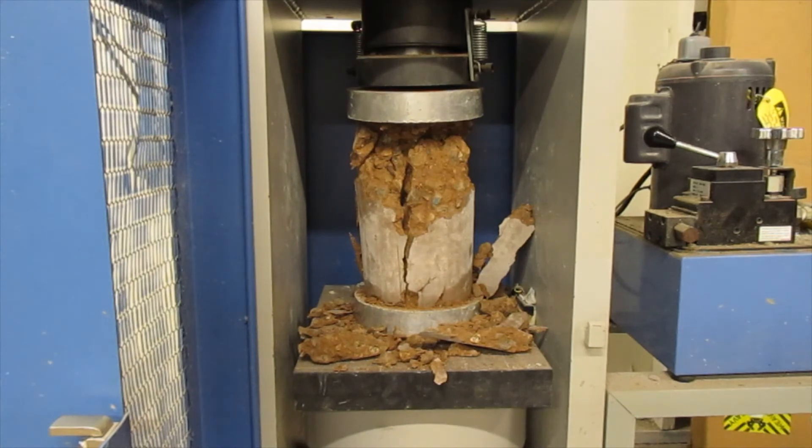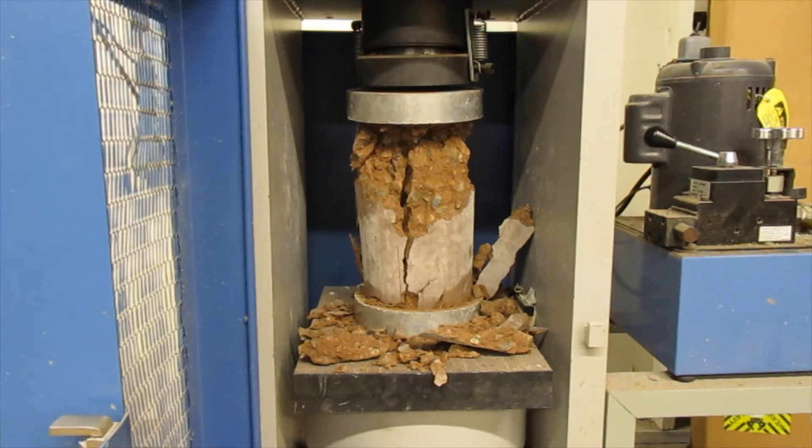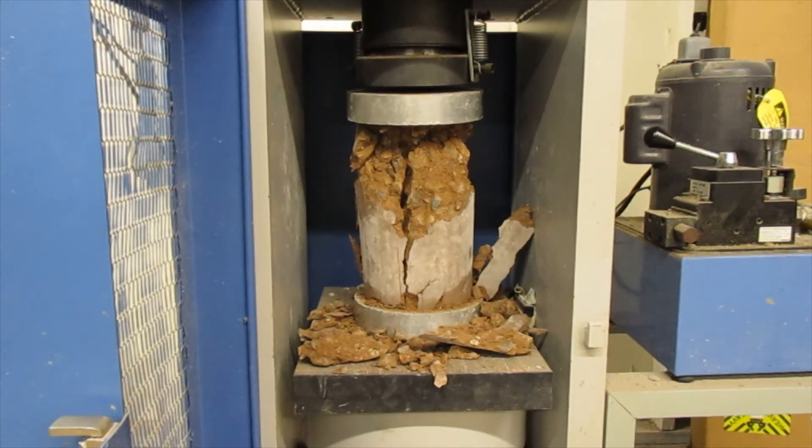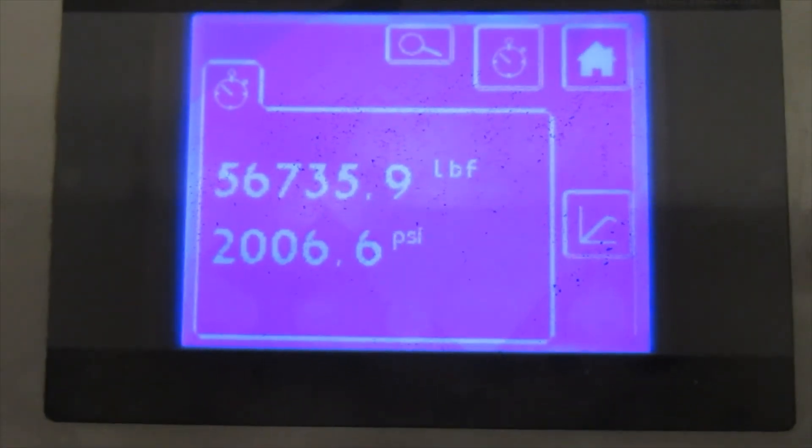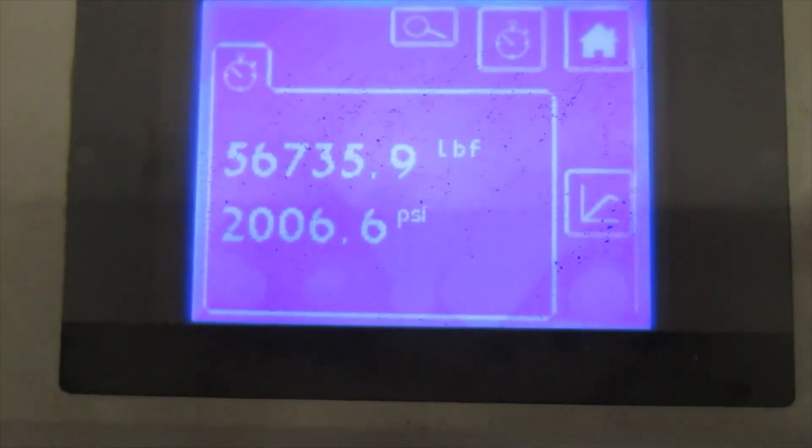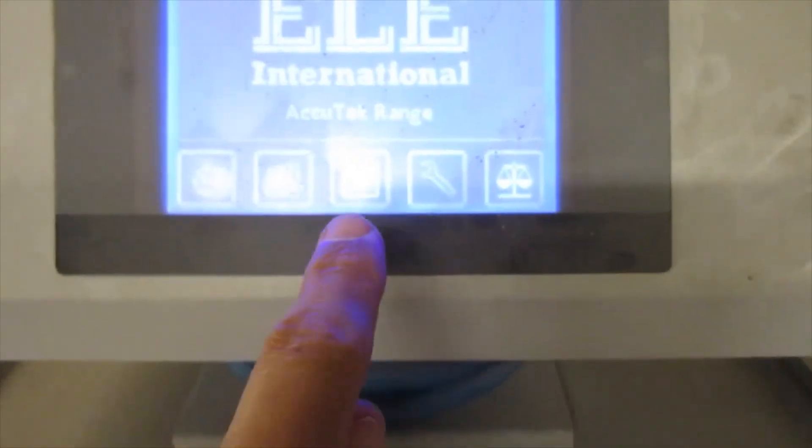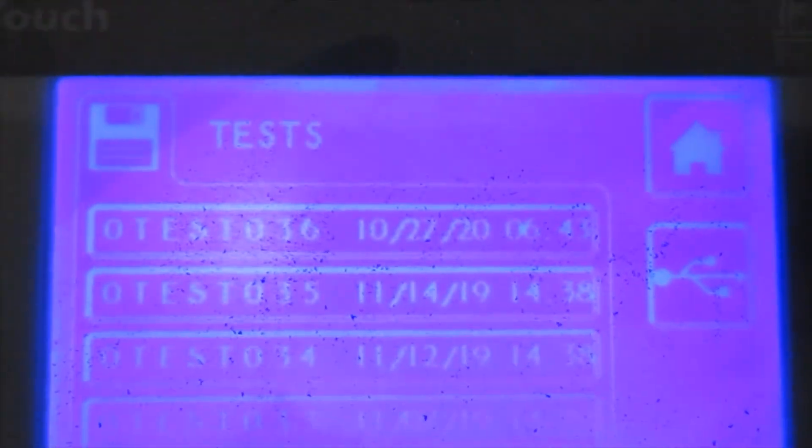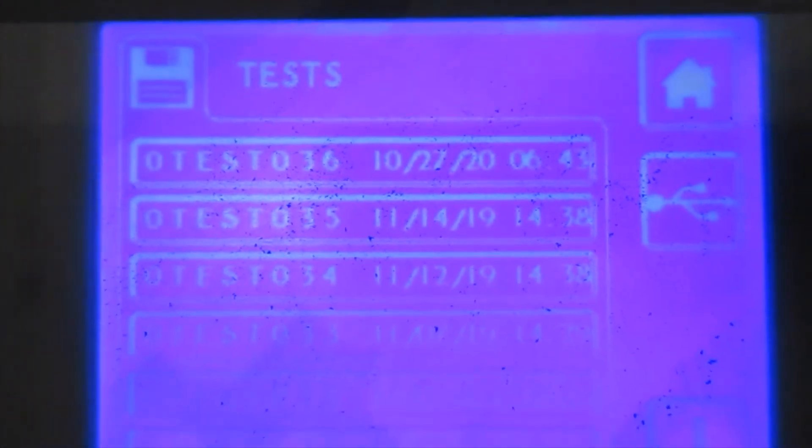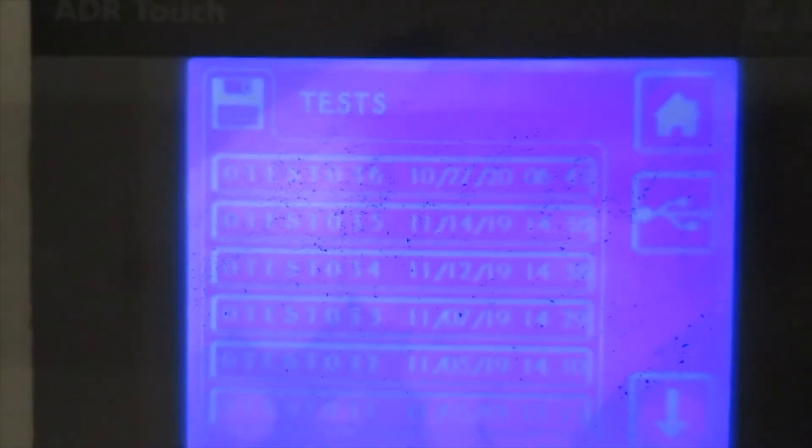How does that look? Let me shut this off. Okay, so you can write this down. The cylinder took 56,735.9 pounds. It looks like 2,006.6 PSI. So press the home icon. And let's see if it saved it. So today, 10-27-20. O test 036. So I can come back later and get that information if I didn't write it down.